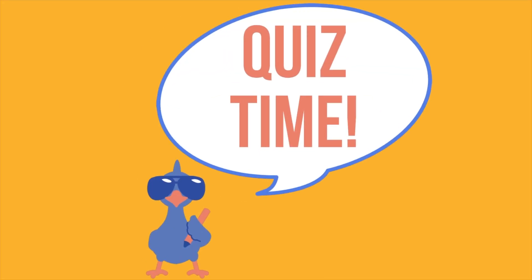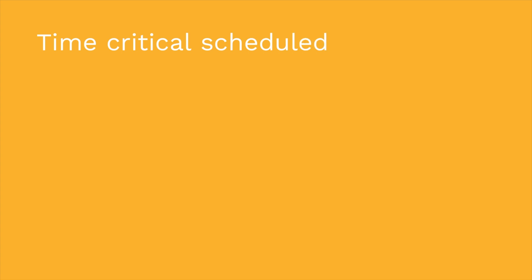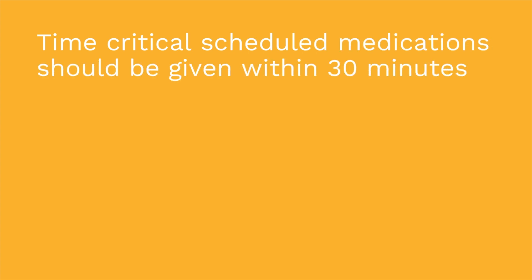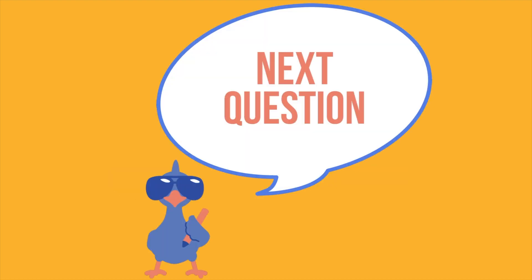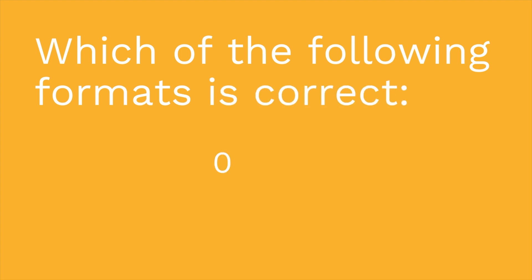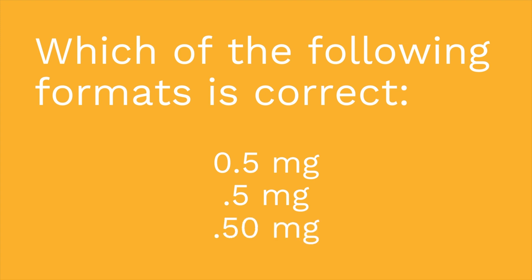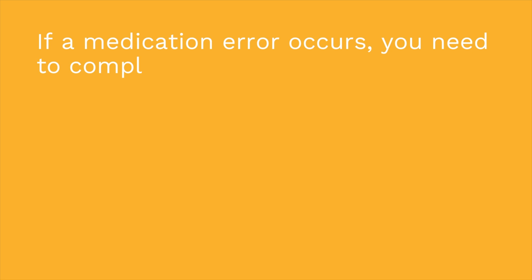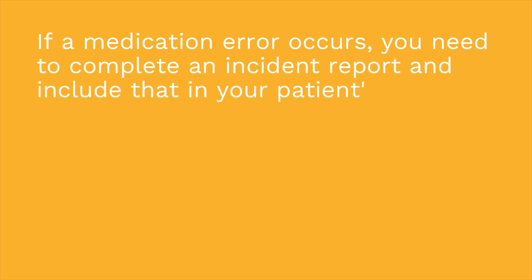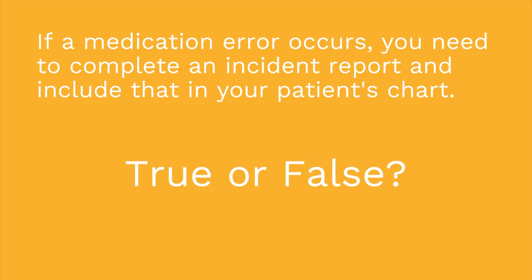Now for a quiz with three questions. First: time-critical scheduled medications should be given within 30 minutes before or after the scheduled time — true or false? The answer is true. Second: which is correctly written — 0.5 mg, .5 mg, or 0.50 mg? The answer is 0.5 mg. Third: if a medication error occurs, you need to complete an incident report and include it in the patient's chart — true or false? The answer is false — we do not include that incident report in the patient's chart.